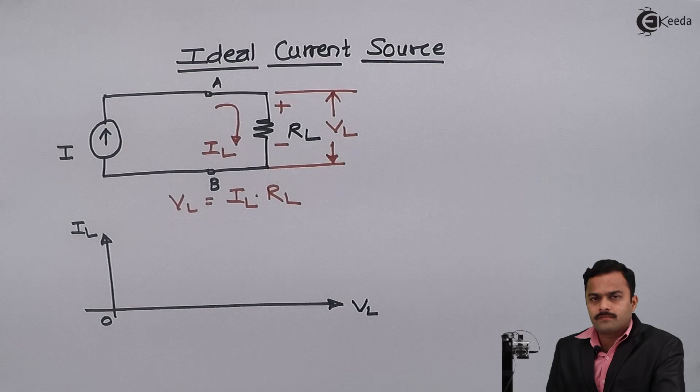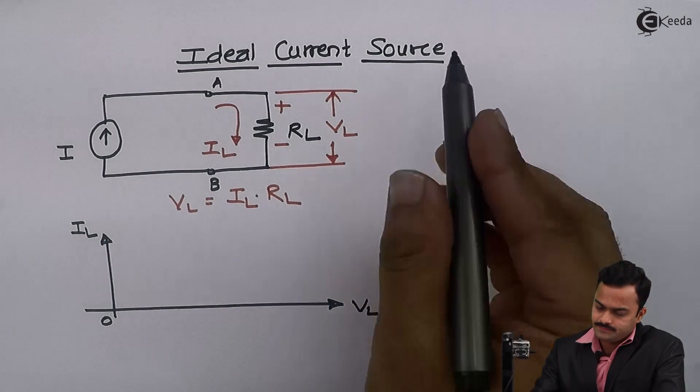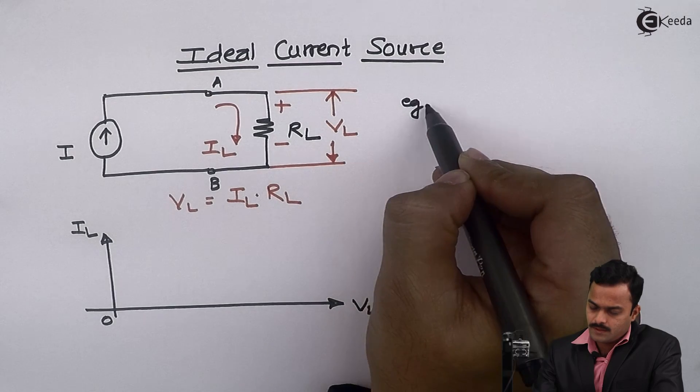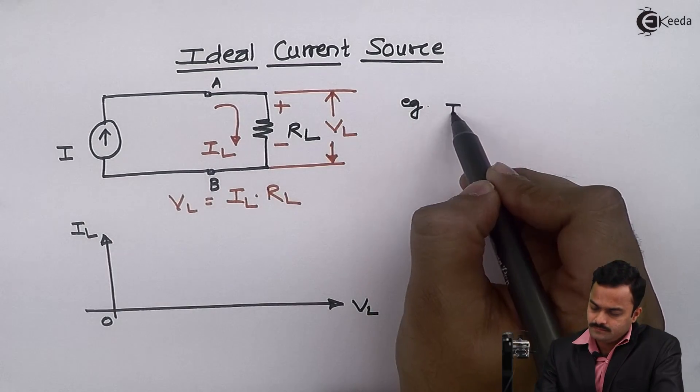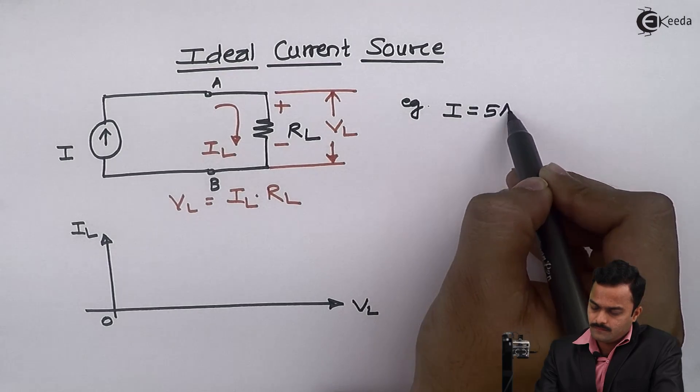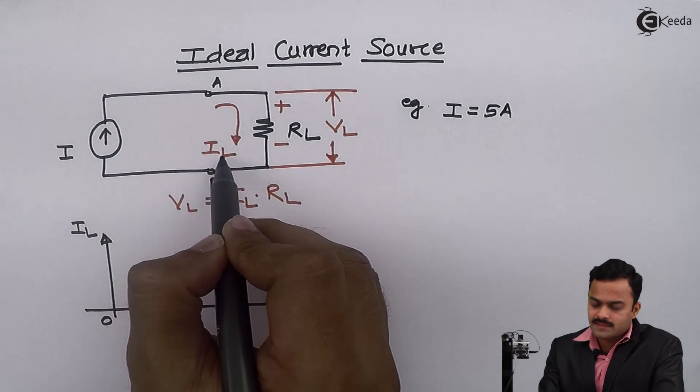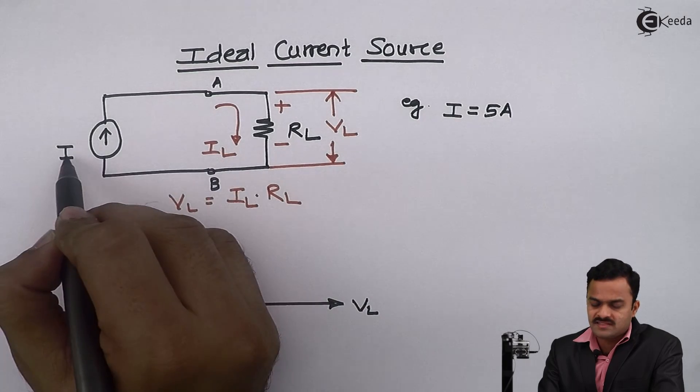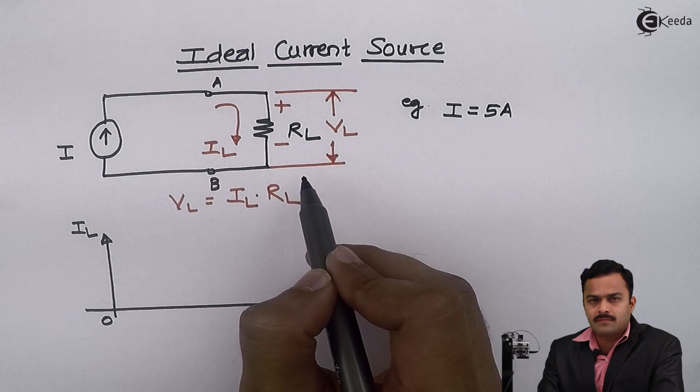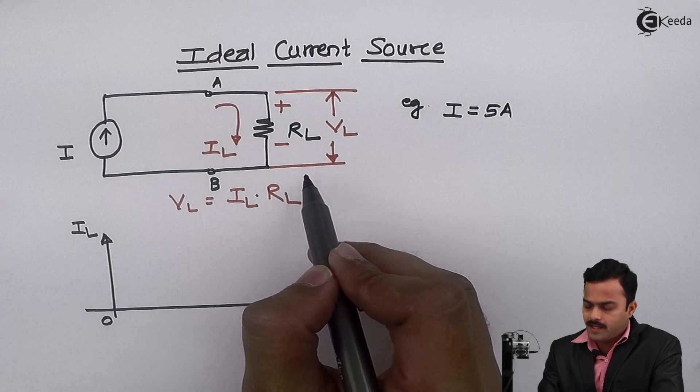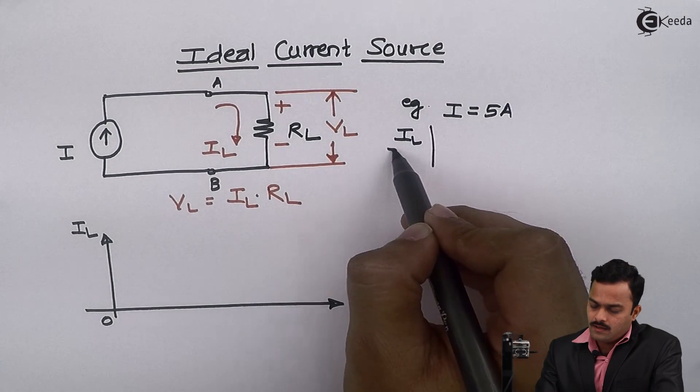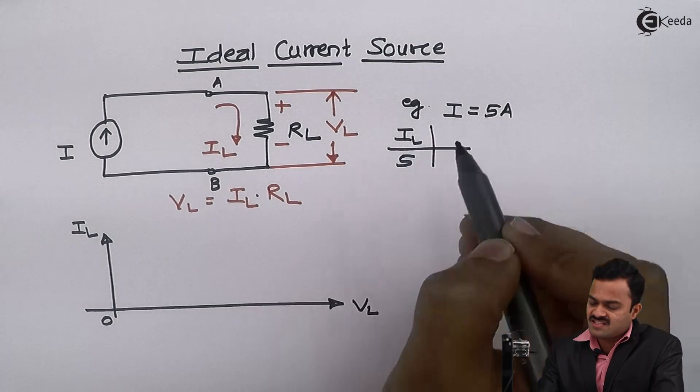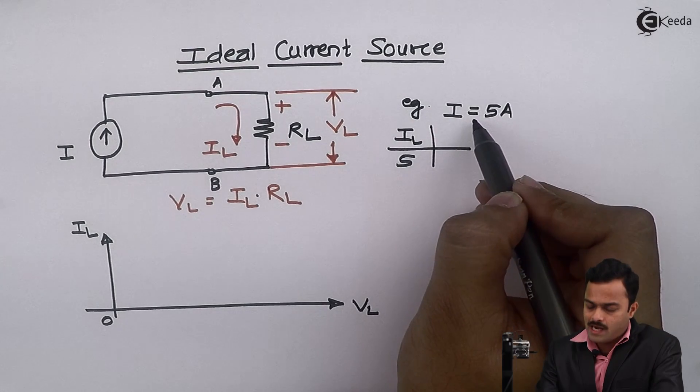Now let's take a simple example. Let's take this current source is of 5 ampere. Since for this IL the only source is this I, every time I can say IL will be 5 ampere.